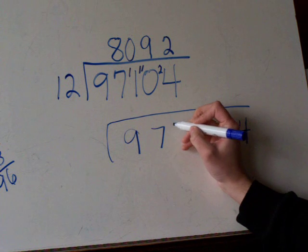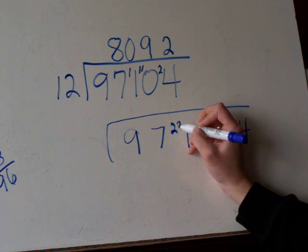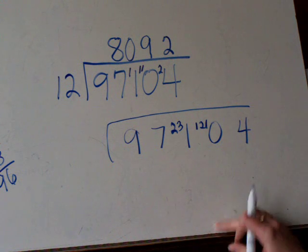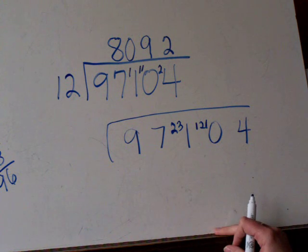Because then if you have a remainder of 23 or 121, you're going to be able to have room to have it in there. But it takes up less room on the board.